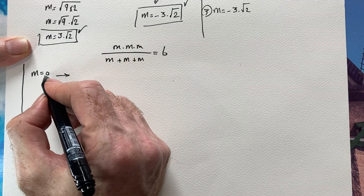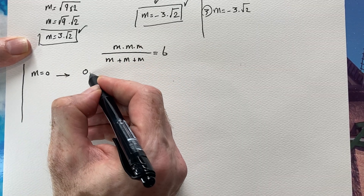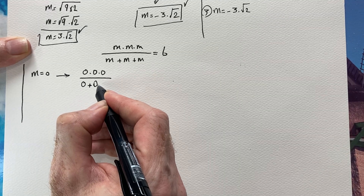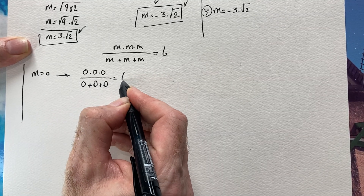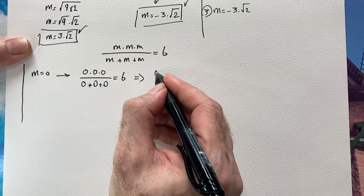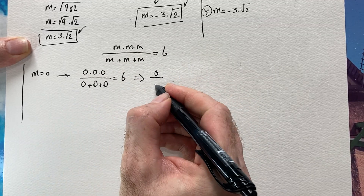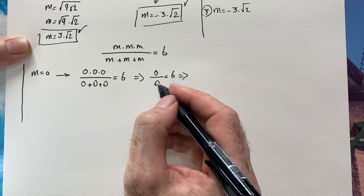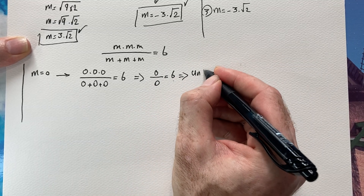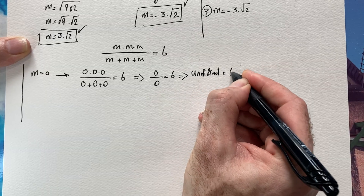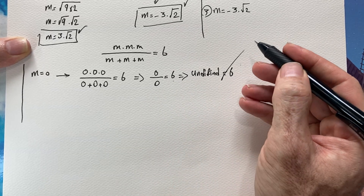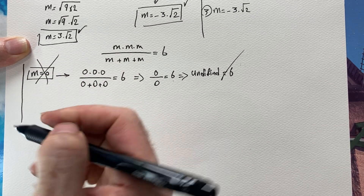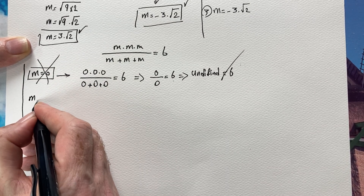Checking m equals zero: we get 0 times 0 times 0 over (0 plus 0 plus 0 plus 0) equals 0 over 0, which is undefined. So m equals zero cannot be our answer.